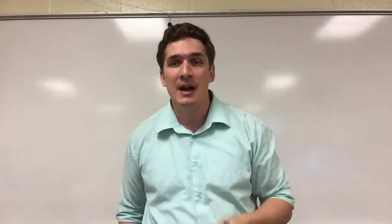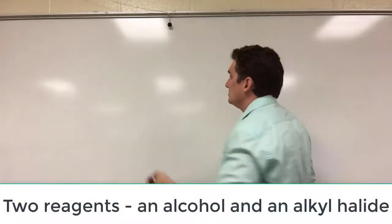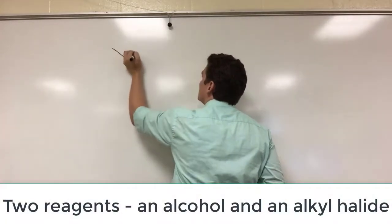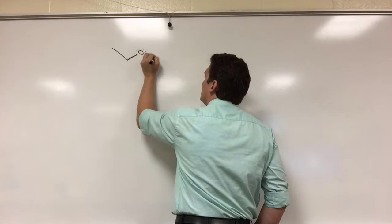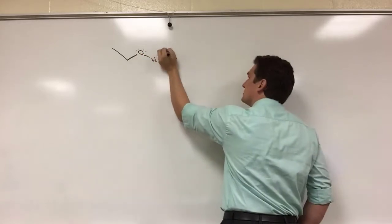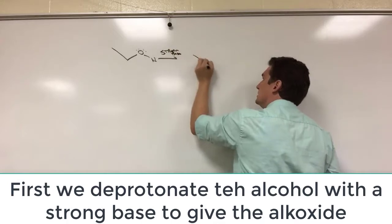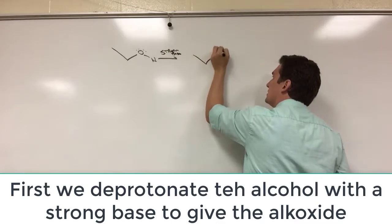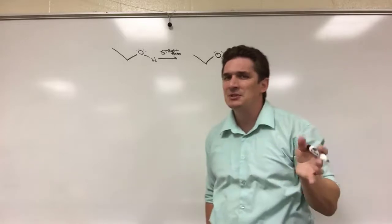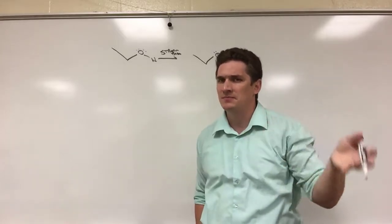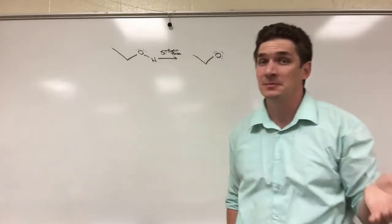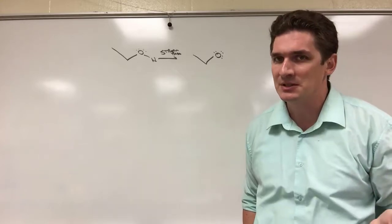The first reagent here is going to be the alcohol. So our alcohol, in this case we're going to use ethanol, we're going to deprotonate using a strong base to give us the alkoxide. And I'm 90% paranoid that this is where the substitute class naming comes from is this idea for the Williamson Ether synthesis.